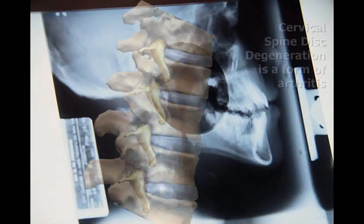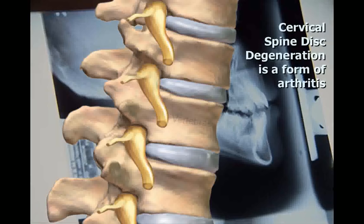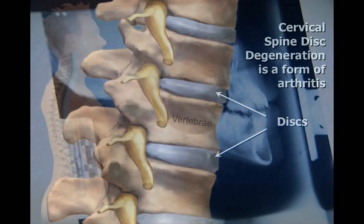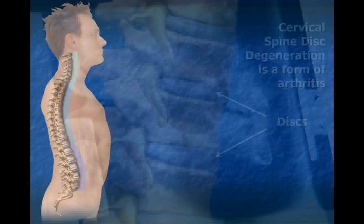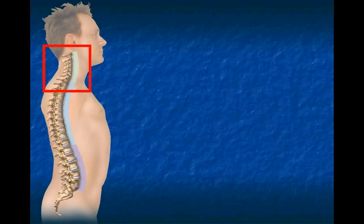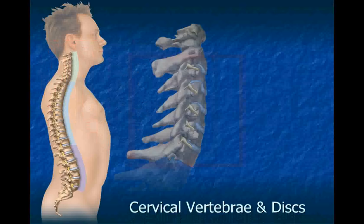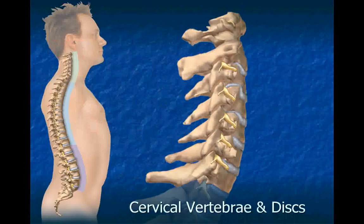Cervical spine disc degeneration is a form of arthritis. Discs are located between each vertebra of the spinal column. The cervical spine is considered to be the first seven vertebrae at the top of the spinal column.